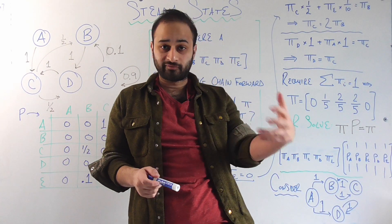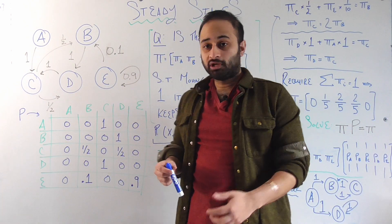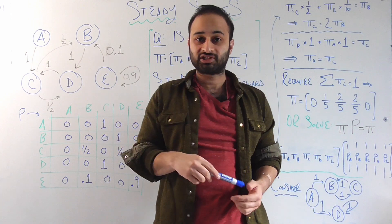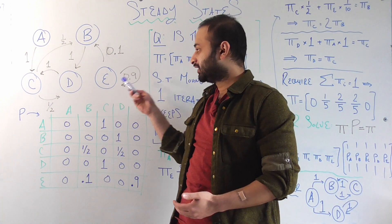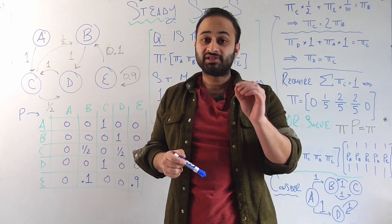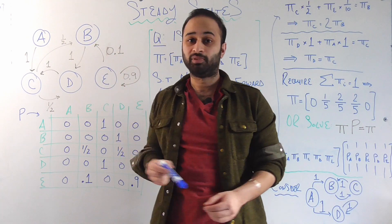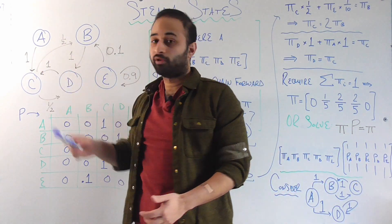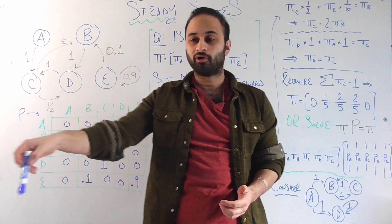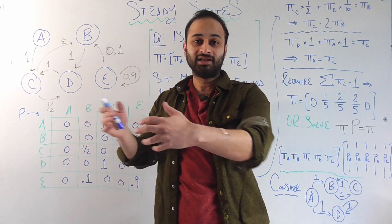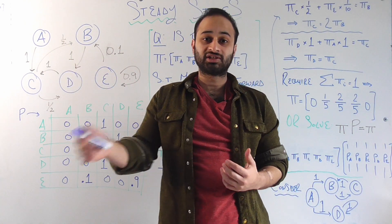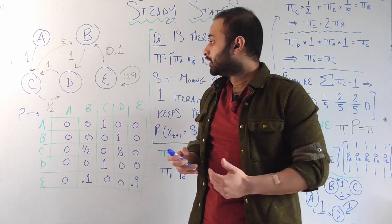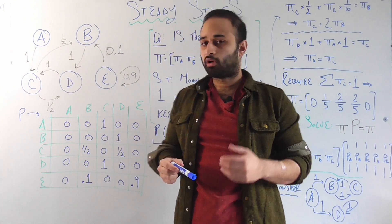Another place where we see a similar flavor, but slightly different, is state E. E is more interesting because there's a 90% chance that if we're at E at some time step, we're going to come back to E in the next time step — so it's very likely we'll remain at E for a really long time. But there is a non-zero probability: there's a 10% chance that we jump to B instead. The crucial thing to understand is that there's no way to get back to E. So just like with A, both A and E have this property that if we're there, eventually we're going to exit, never to return again.